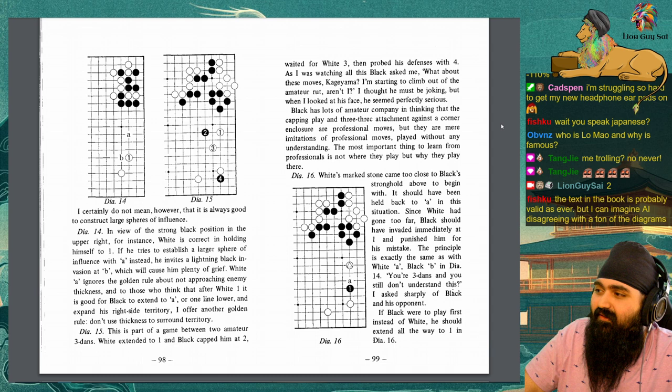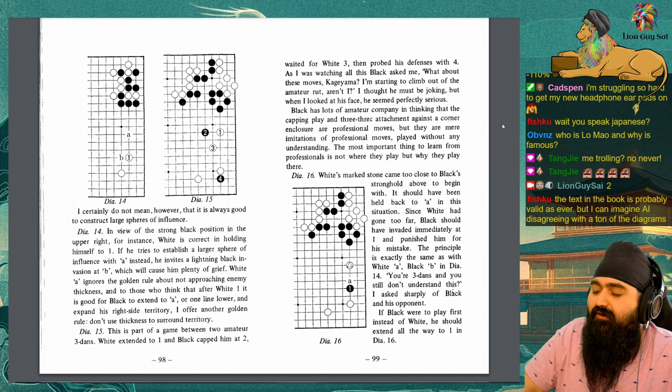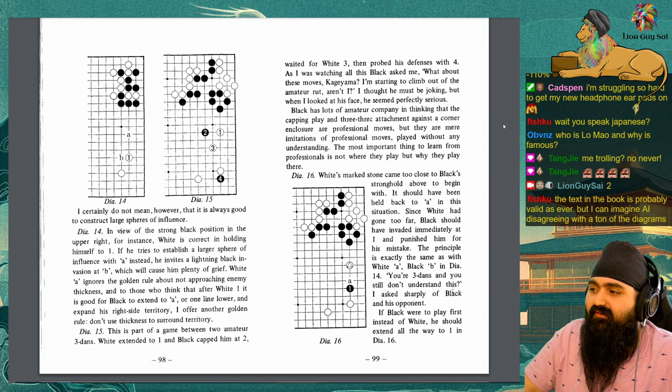Black has lots of amateur company, and thinking that the capping play and 3-3 attachment against the corner enclosure are professional moves. But they are mere imitations of professional moves, played without any understanding. The most important thing to learn from professionals is not where they play, but why they play there.